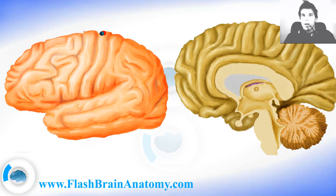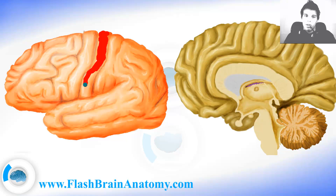We have the primary sensory cortex here on the post-central gyrus. This cortex is important for receiving signals from receptors all over the body. On the medial side of the brain you can still notice that part of the cortex here.